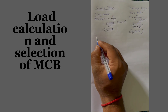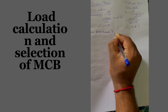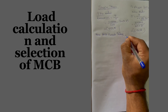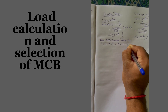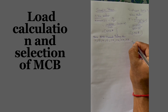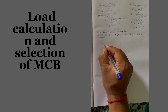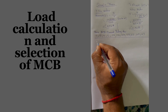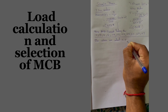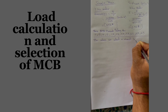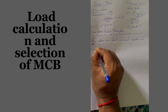Standard MCB current ratings are always specific values: 1, 2, 4, 6, 10, 16, 20, 25, 32, 40, and 63 amperes. When selecting a circuit breaker, we always choose 10 to 20 percent extra current rating above the calculated load current.